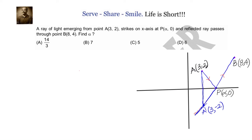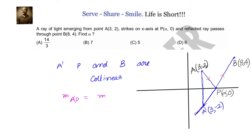We can very clearly see that A', P, and B are collinear — they are points on the same line. In that case, we can equate the slopes of the line segments, saying slope of A'P equals slope of BP. If we have coordinates (x₁, y₁) and (x₂, y₂), then the slope of a line segment is given by (y₂ − y₁) / (x₂ − x₁). Let us leverage that to find α.